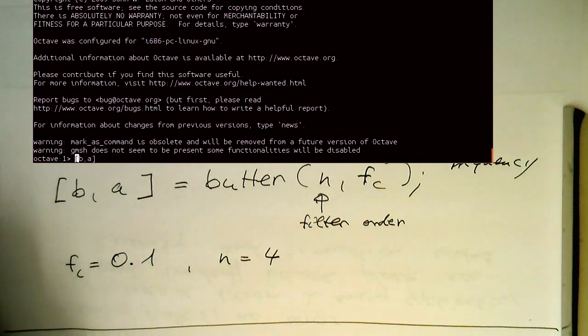So that's B, A, and then butter, and then 4, 0.1.